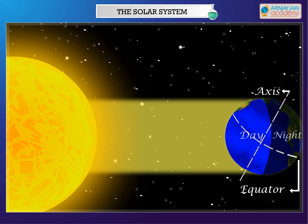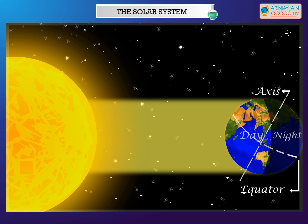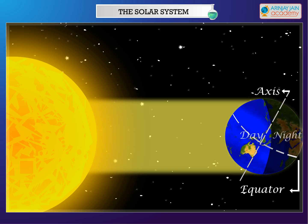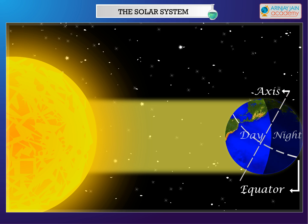The Earth rotates on a tilted axis from west to east and takes 24 hours to complete one rotation. The rotation of Earth leads to the formation of day and night.